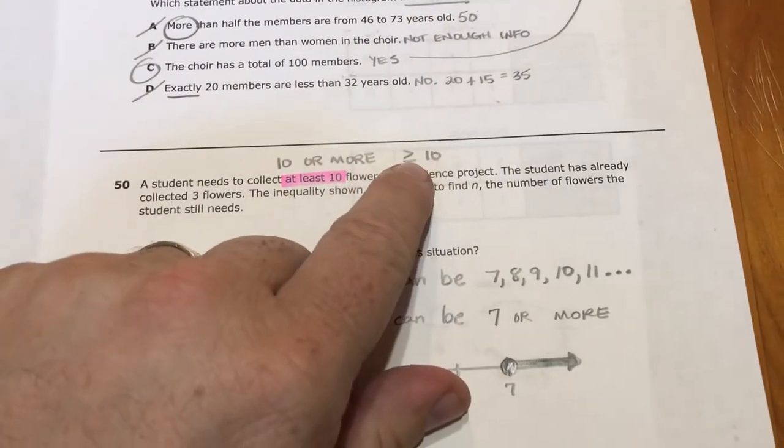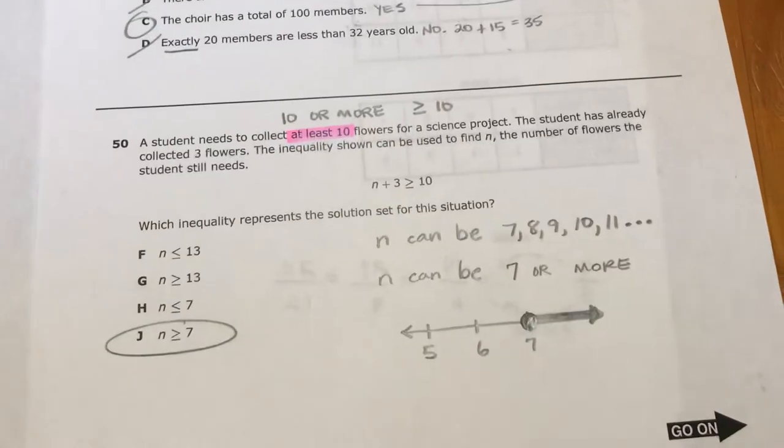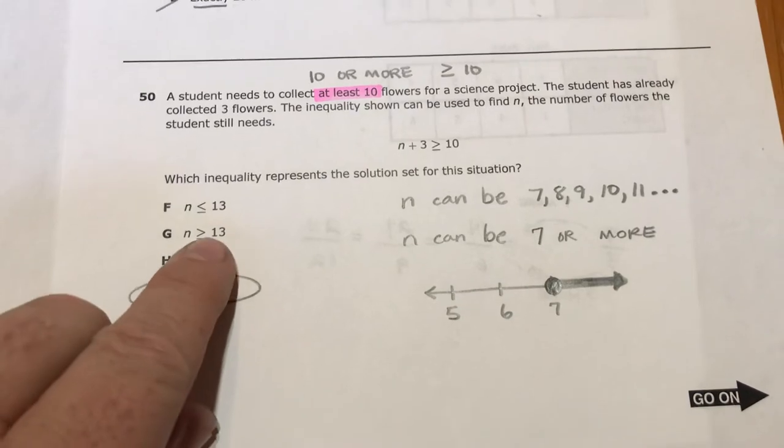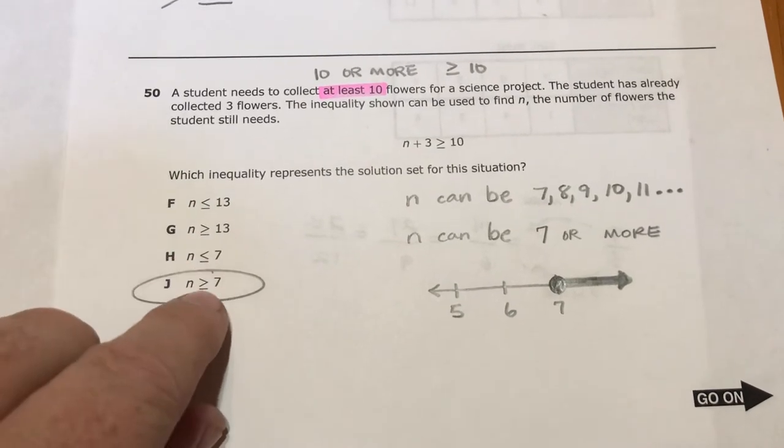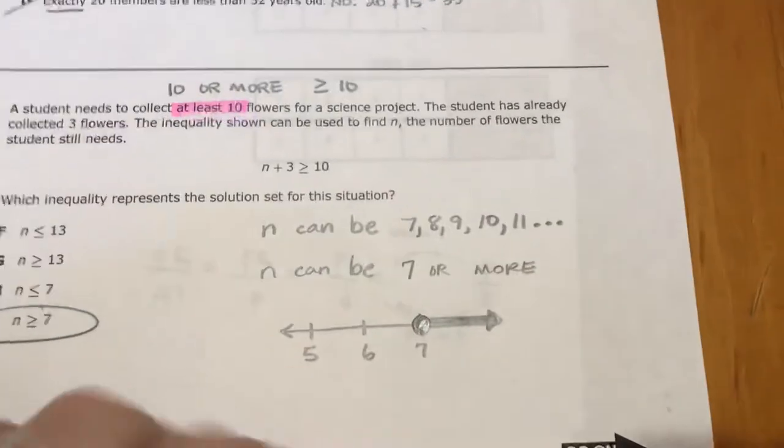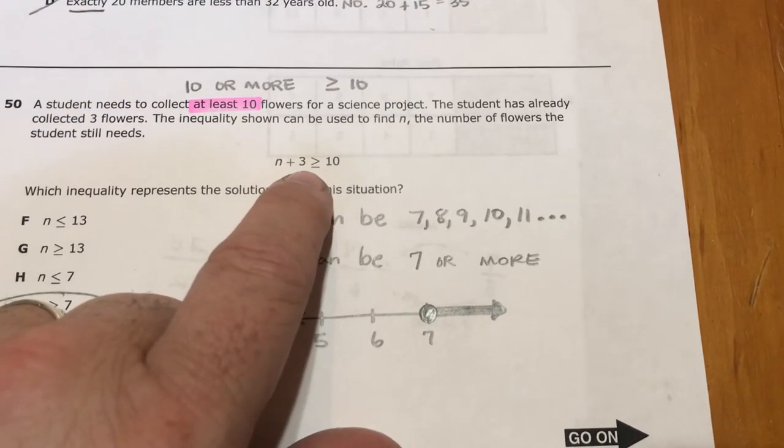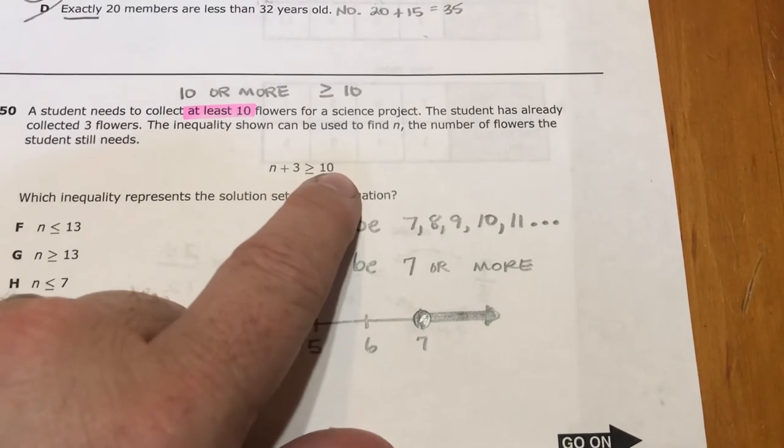So 10 or more, we're looking for something that has this symbol. And you can see this answer choice right here has it, but so does G. So we need to figure out if we're talking about 7 or 13. So here's your equation: something plus 3 has to be greater than or equal to 10.